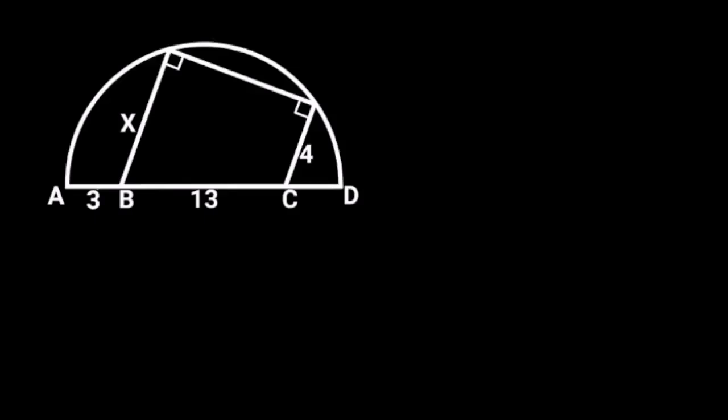This figure is a semicircle. On the diameter of the semicircle, AB is given as 3 units, and BC is given as 13 units.